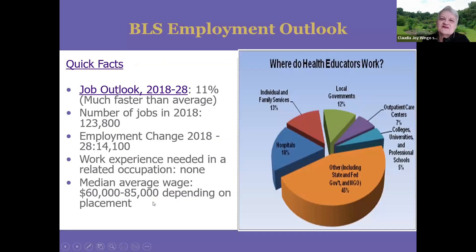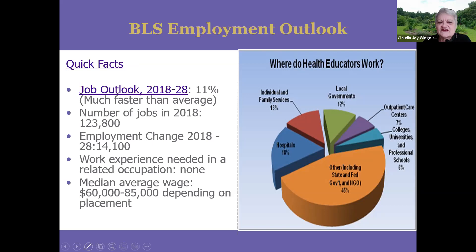From the Bureau of Labor Statistics, the job outlook goes up to 2028 at about 11% faster than average, so there are quite a lot of jobs out there. The median average wage is really anywhere from about $65,000 to $85,000 a year, depending on where you get the job, and it's gone up a little bit during COVID. There are a number of different places you can work: state and federal government, non-governmental organizations, non-profits, hospitals, individual and family services, local government, outpatients, universities, schools, and professional schools.